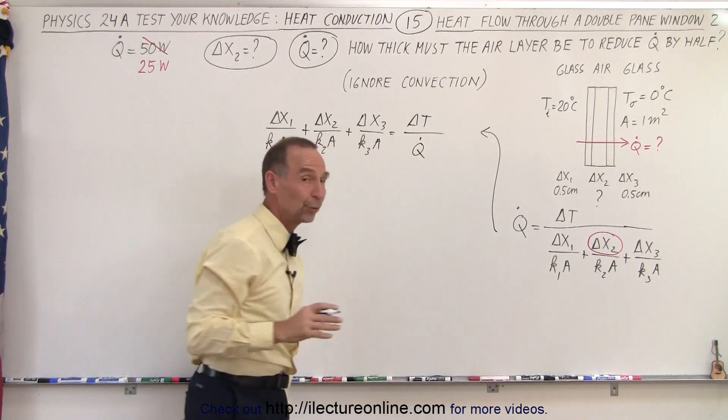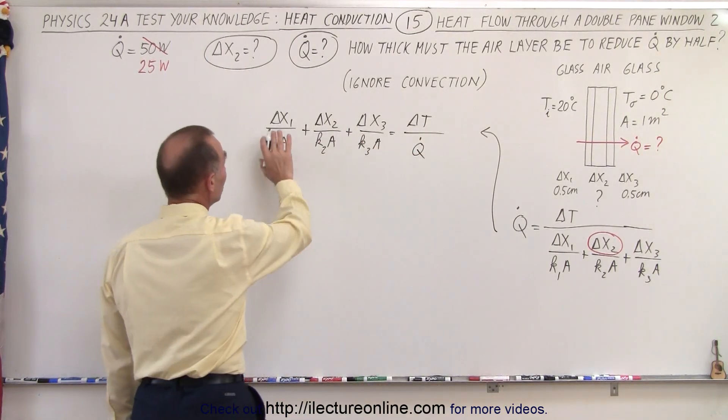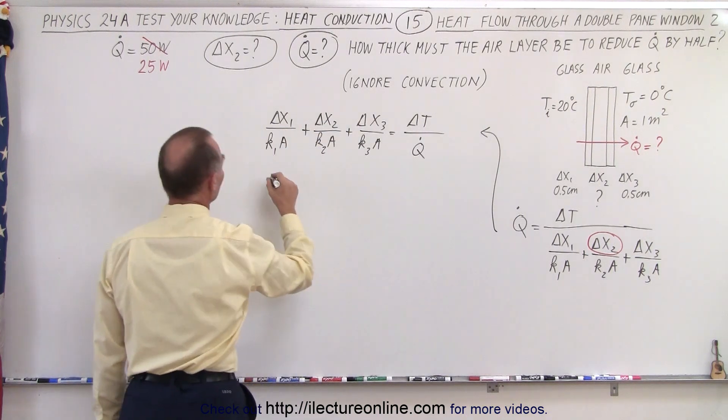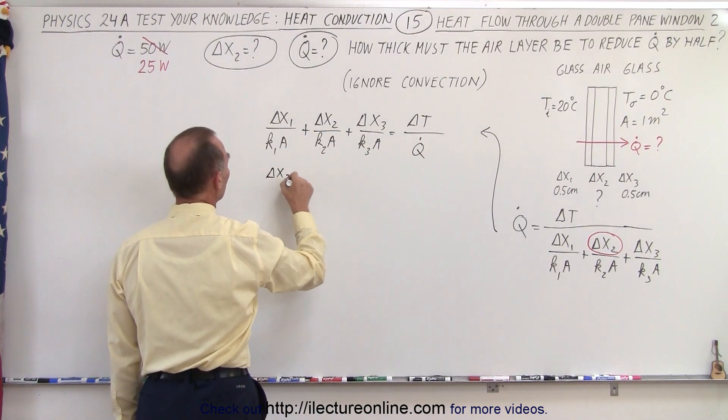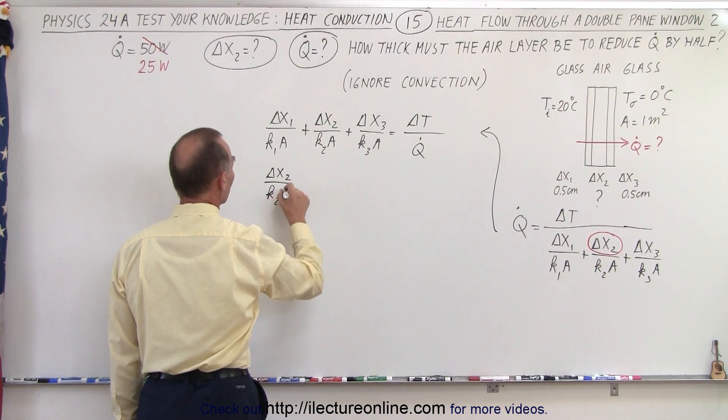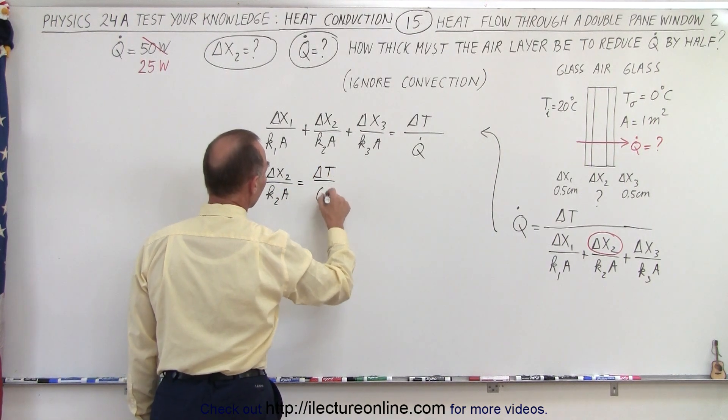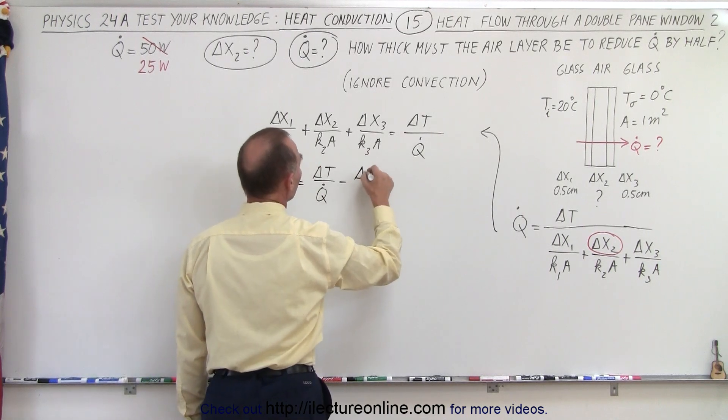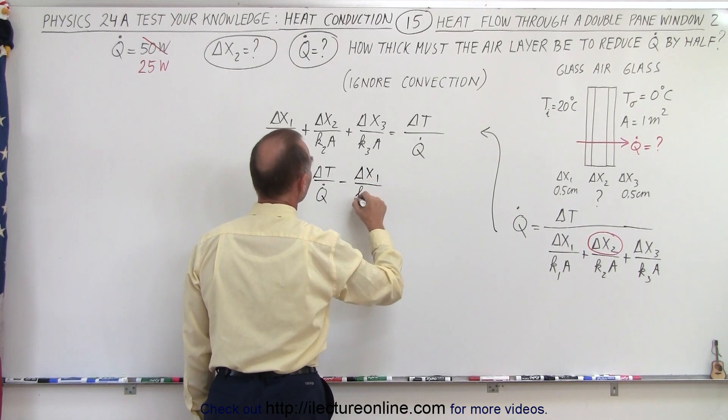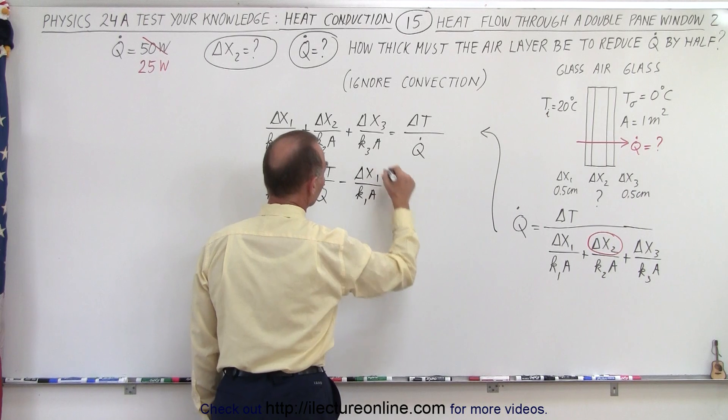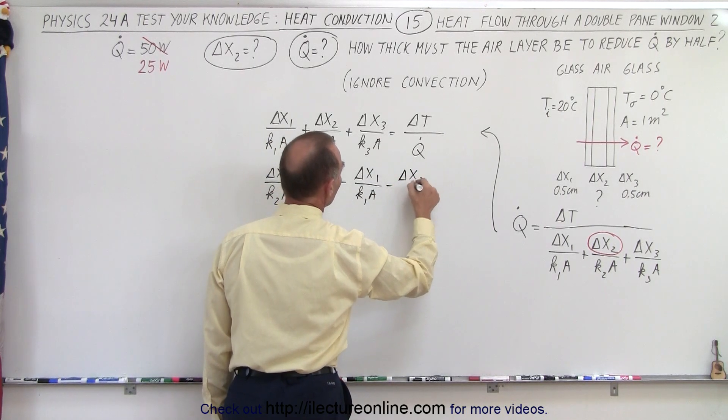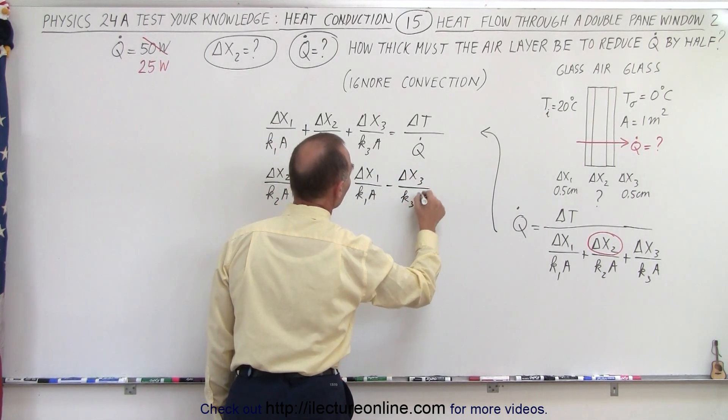And of course the new heat flow is going to be 25. Now we need to move these other two terms to the right side. So we end up with delta x2 divided by k2a is equal to delta t divided by q dot minus delta x1 divided by k1a minus delta x3 divided by k3a.